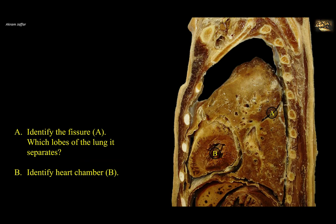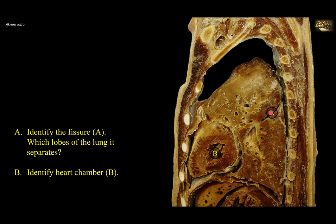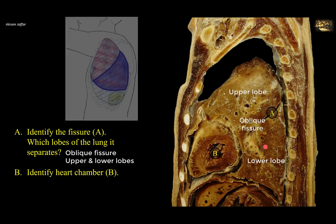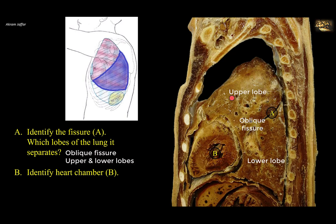Identify fissure A, which lobes of the lung it separates, and identify heart chamber B. This is a sagittal section of the thorax to the left of the midline. You can see the small left lobe of the liver under the diaphragm, and the rugae of the stomach below the left dome of the diaphragm. Note the conical shape of the lung with a base and an apex. This lung has two lobes and one fissure. Fissure A is the oblique fissure, separating the upper and lower lobes of the left lung. Because of the obliquity of the fissure, the lower lobe is mostly posterior while the upper lobe is mostly anterior.